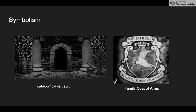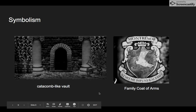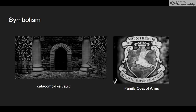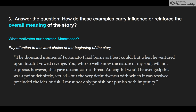The Montresor coat of arms would appear on their mansion, their horses' saddles, their property, gates, fences, and servants' uniforms. This coat of arms depicts a foot stepping on a snake — what could that possibly mean in terms of Fortunato and Montresor? Also, deep in the caves where they finally find the cask, the barrel of wine, there are bones everywhere. What do bones represent? In most cases, death. This is a symbol telling you someone is going to die.